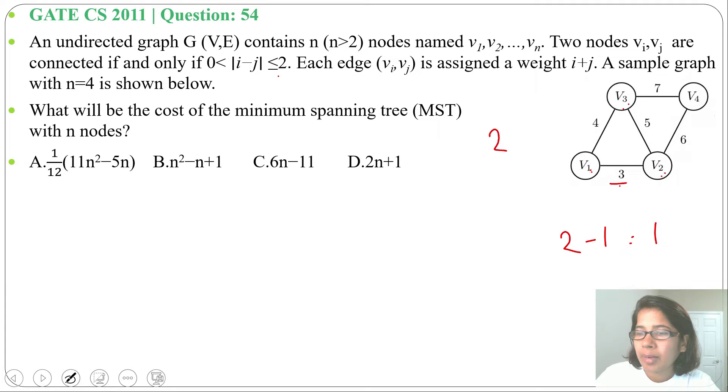Here V4 minus V2 difference is 2 and weight is 4+2=6. Here V3 minus V2 is 1 so it's connected and weight is 3+2=5. Here 4-3 difference is 1 connected, 4+3 weight is 7. V4 and V1 are not connected as 4-1=3 and 3>2, it should be ≤2, so it's not connected.